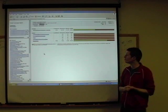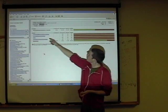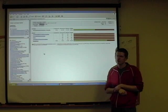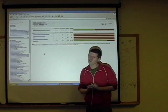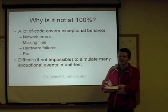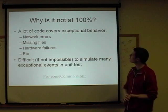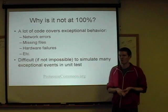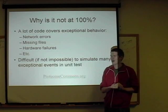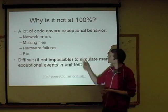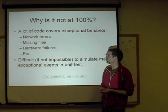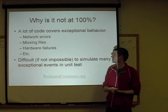This is an important thing to note with code coverage and unit tests: sometimes you're not going to cover everything. For example, these three classes here are exceptions. One of the exceptions is an out-of-disk-space exception. You're not typically going to catch something like that in a unit test because you're not trying to actually throw an out-of-disk-space exception. A lot of code covers exceptional behavior — not just exception classes, but things like catch blocks in your regular classes. Network errors, missing files, corrupted files, hardware failures, or power failures are all very difficult, if not impossible, to simulate in a unit test.